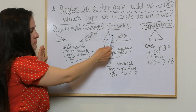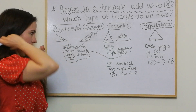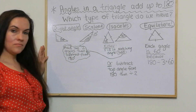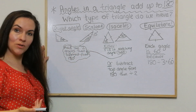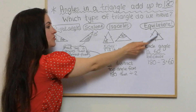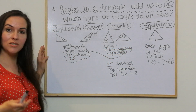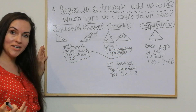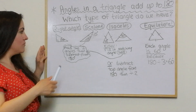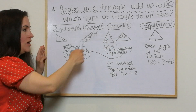An isosceles triangle is one you've possibly heard of, where you've got two sides the same, which actually means that two angles are the same and the top one's different. An equilateral triangle is where all three sides are the same, which means that all three angles are the same as well.